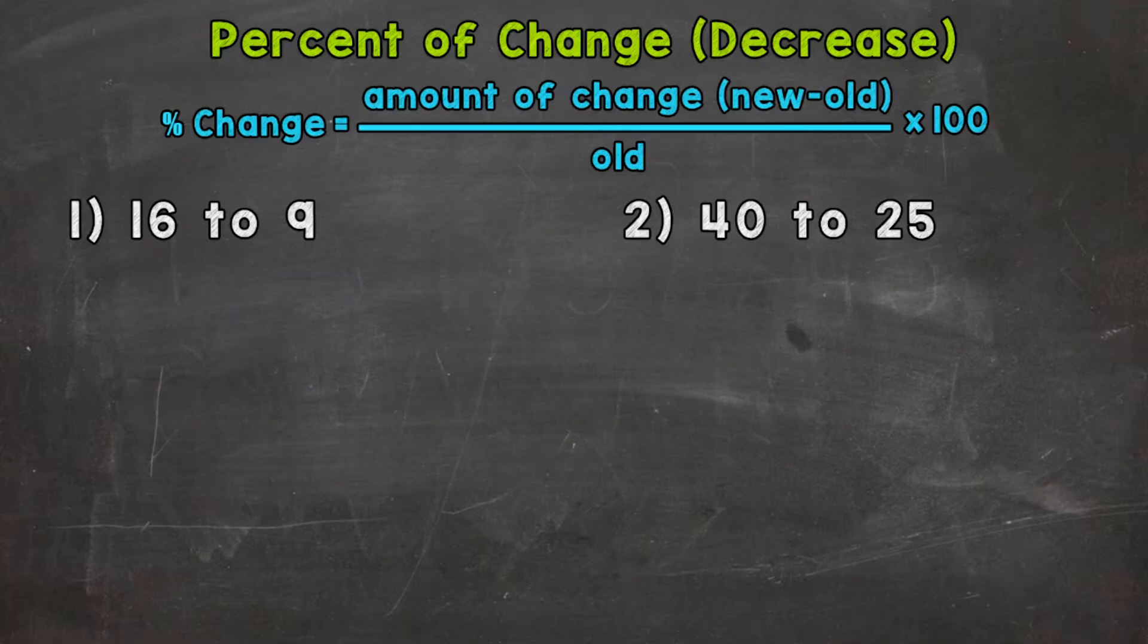Now when we calculate a percent of change, we need to find the amount of change, so the new number minus the old number. Then we divide by the old number. Lastly, we multiply by 100. So when we do the amount of change divided by the old number, we're going to get a decimal. We multiply by 100 to convert that decimal to a percent.